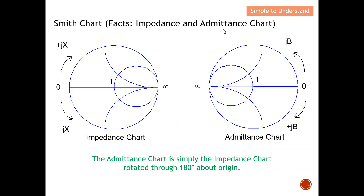Next, I'm going to discuss impedance and admittance charts. This diagram shows both charts. The admittance chart is simply the impedance chart rotated 180 degrees about the origin. Conversely, you can transform an admittance chart back to an impedance chart by rotating it 180 degrees again. Looking at the impedance chart: when we have a positive +j term, it appears above the resistance line. When we have a negative -j term, it appears underneath the resistance line.